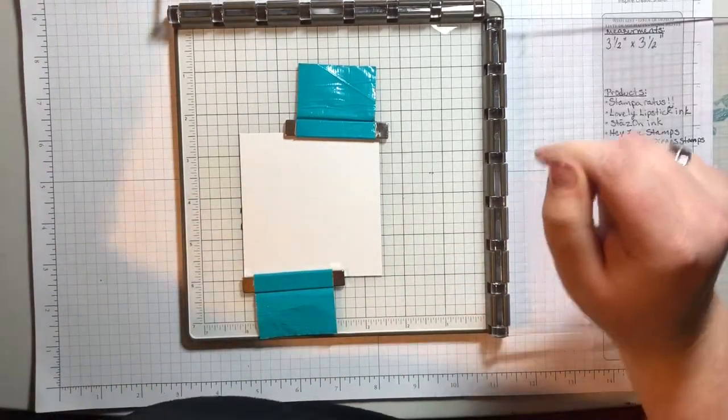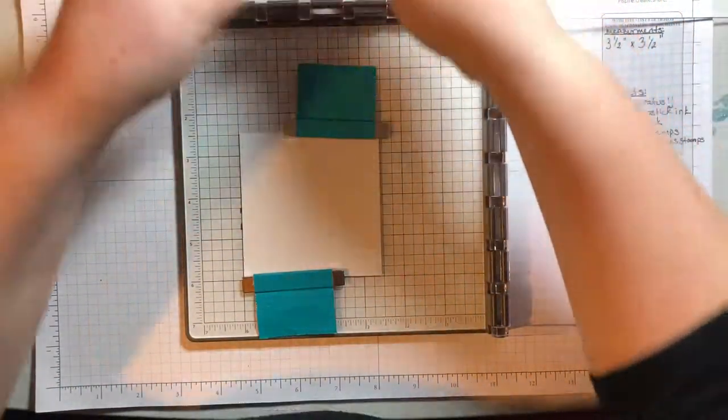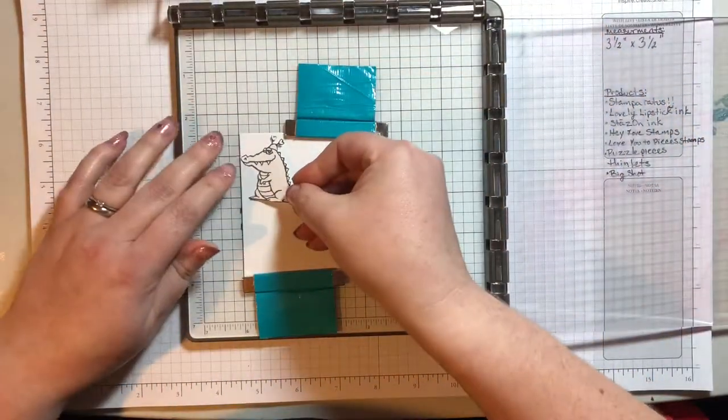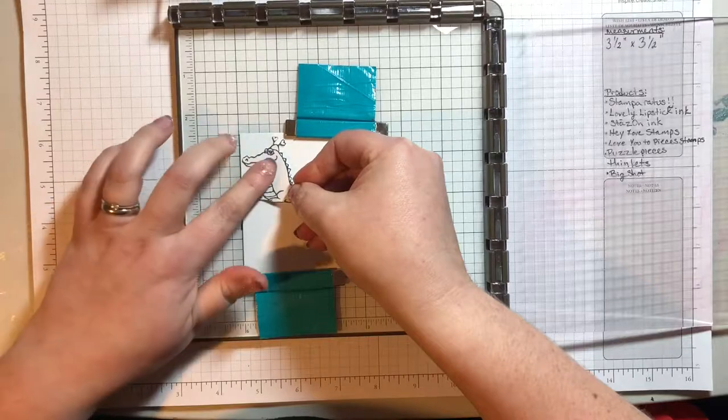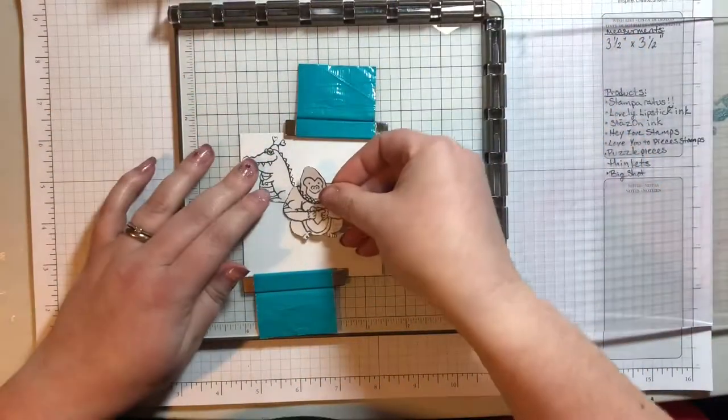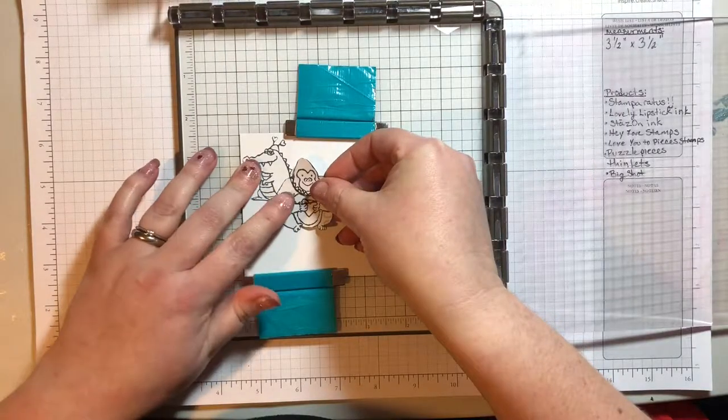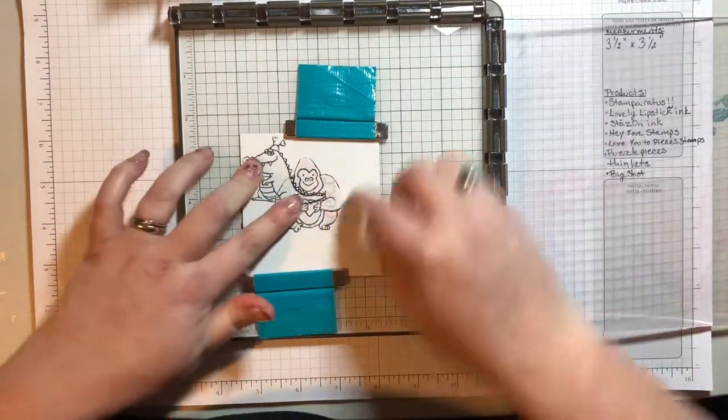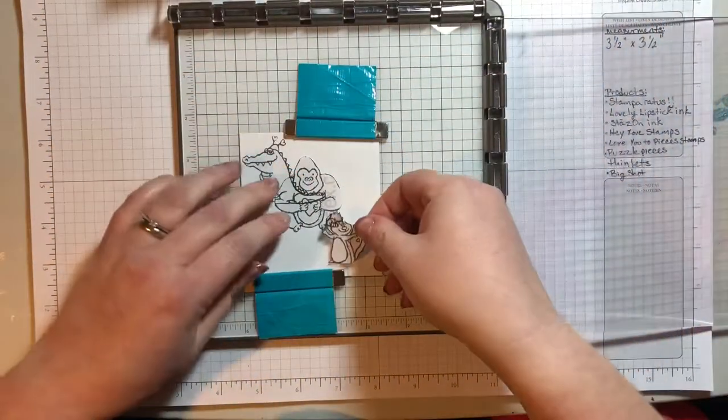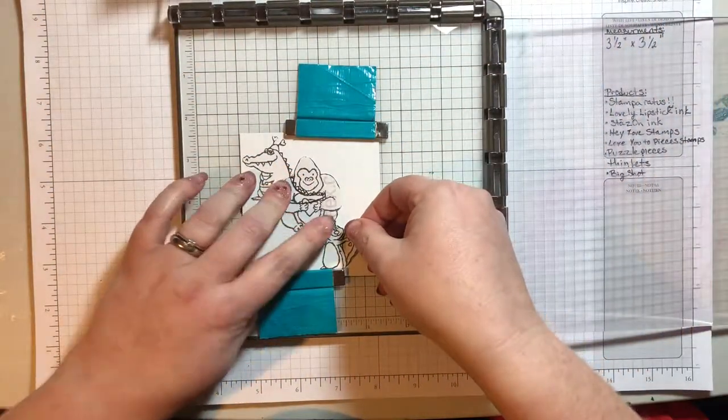All right, so for placement of my characters, I know I need the alligator character to be up here in the corner. And I know I need the gorilla in the middle. I'm just going to line them up where I stamped over them.